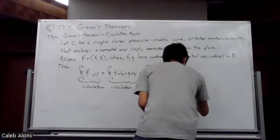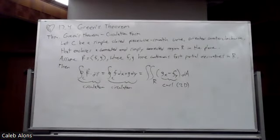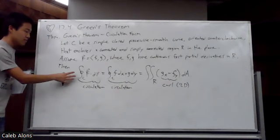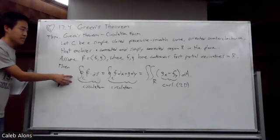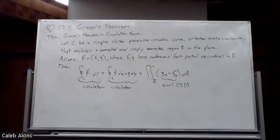Circulation goes with curl, and net flux goes with divergence. This is a little abstract, so once you get this in your notes give me a thumbs up, and then I'm going to draw you one picture to help ground yourself.